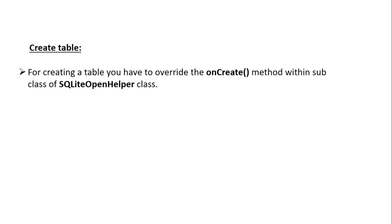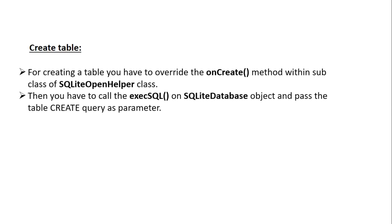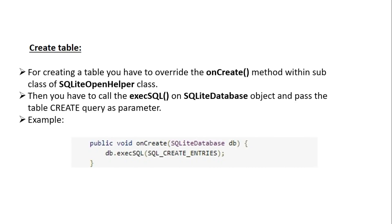Now we can learn about how to create a table in the database. For creating a table, you have to override a method called onCreate within your subclass of SQLiteOpenHelper. Then you have to call execSQL on the SQLiteDatabase object and pass the create query as a parameter. Here is the onCreate method containing one SQLiteDatabase object parameter, and we call execSQL on that object, passing the create query as a parameter.